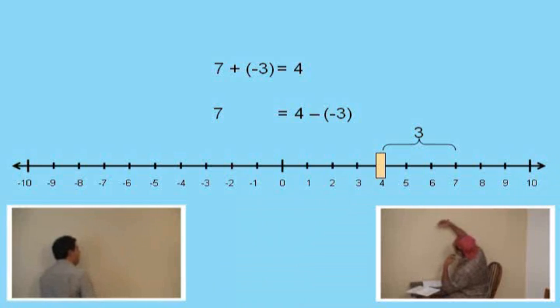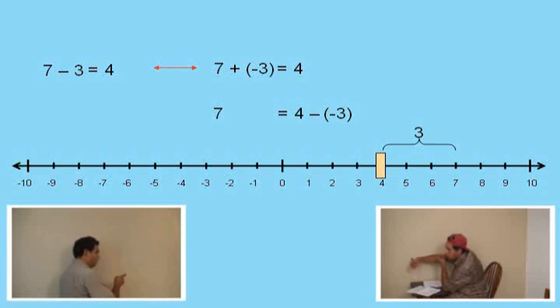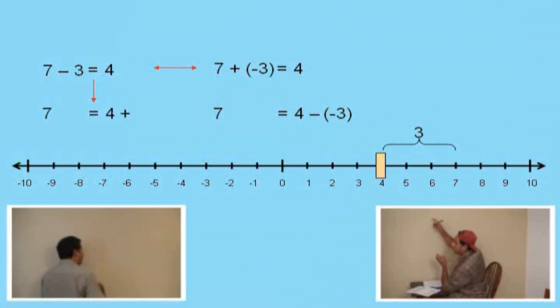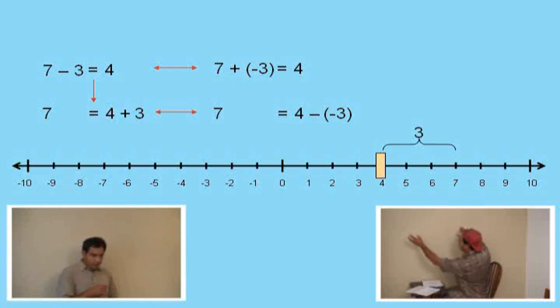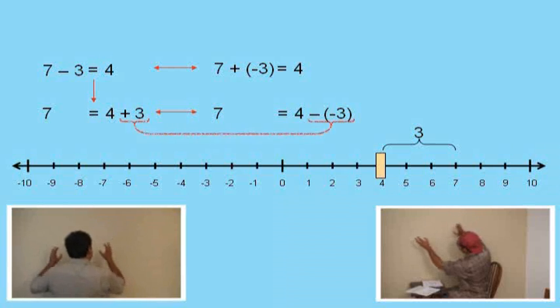When we were doing 7 plus negative 3 equals 4, you had said 7 subtract 3. Yes. Equals 4, correct? Yes. Okay. And with that result, Charlie, that means that what number do you add to 4 to get 7? 3. It's 3. So we're seeing that 4 plus 3 is 7. And that is equivalent to our result that we got previously, which is that 7 should equal 4 subtract negative 3. So look at those two things there, Charlie.